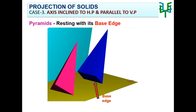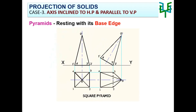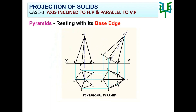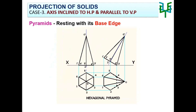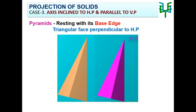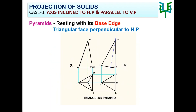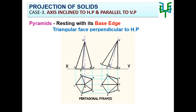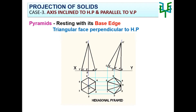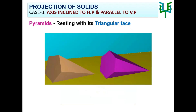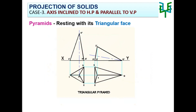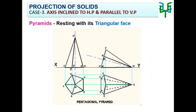Let us see different pyramids with the same condition — resting on the ground with the base edge and axis inclined to HP and parallel to VP: triangular pyramid, square pyramid, pentagonal pyramid, hexagonal pyramid. Though the pyramid is resting with its base edge, the triangular face can be perpendicular to HP. This applies to triangular pyramid, square pyramid, pentagonal pyramid, and hexagonal pyramid. Another possibility is the pyramid lying on the ground with its triangular face — triangular pyramid, square pyramid, pentagonal pyramid, hexagonal pyramid.